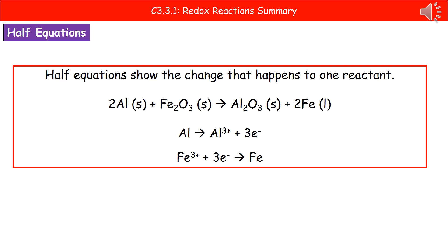A half equation just shows the change to one reactant. If we think about our thermite reaction and break it down into two half equations, we look at what happens to aluminium and then what happens to iron. Aluminium starts as an aluminium atom on the left hand side and then becomes an aluminium ion on the right. Don't forget that if it's becoming an ion, we must involve electrons. So our half equation for aluminium is: Al → Al³⁺ + 3e⁻.